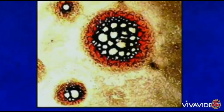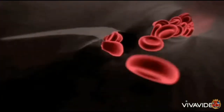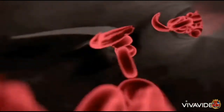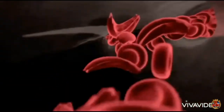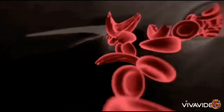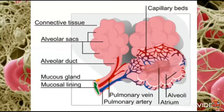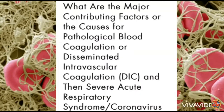But if this is happening inside the blood vessel — which is happening in every case, every autopsy that's been done — there are clots in these COVID patients throughout the entire body. The question is what's causing the blood to go into what is called DIC, disseminated intravascular coagulation, or pathological blood coagulation.